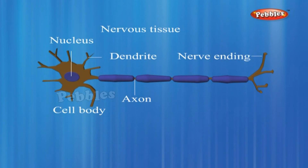Many nerve fibres bound together by connective tissue make up a nerve. Nerve impulses allow us to move our muscles when we want to. The functional combination of nerve and muscle tissue is fundamental to most animals, enabling them to move rapidly in response to stimuli.